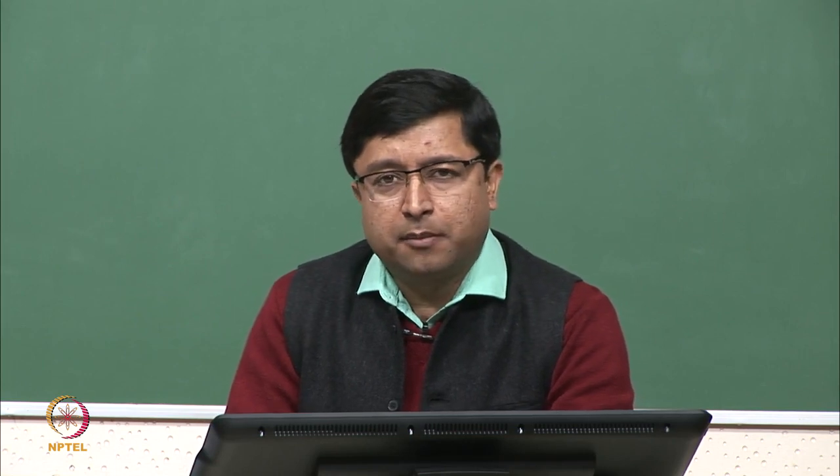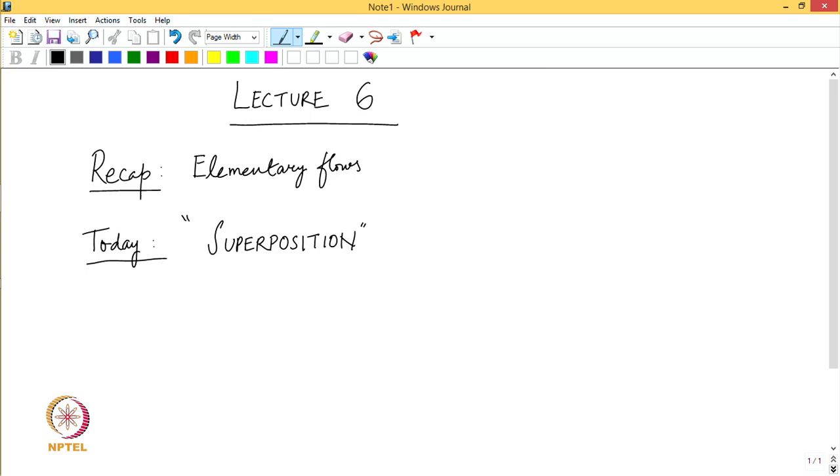In the previous lecture we looked at two more examples of elementary flows, namely flow near a bend and flow over a sharp edge. These were all examples where we had one single complex potential and we could derive the flow field around or in that system.